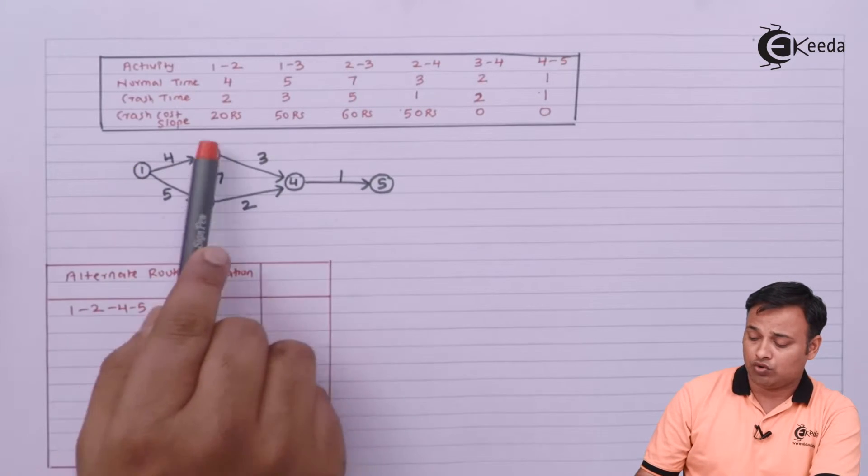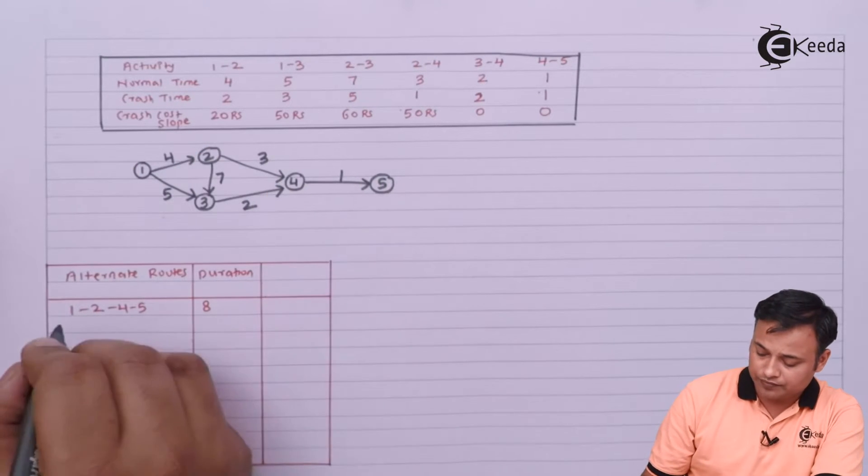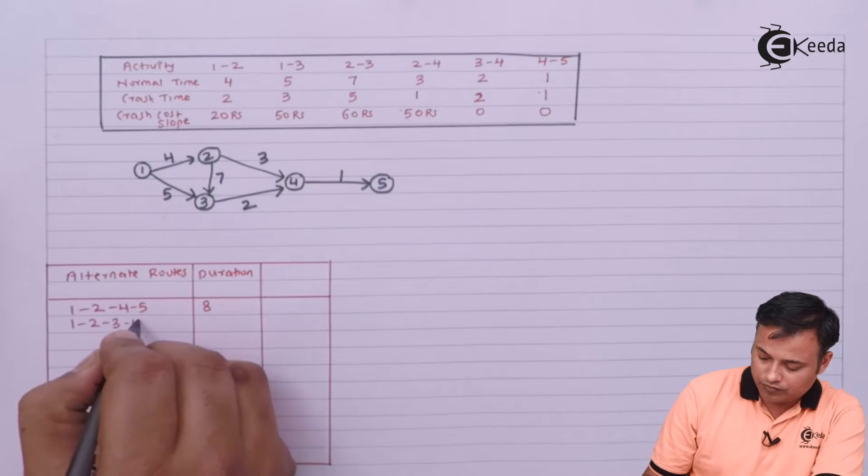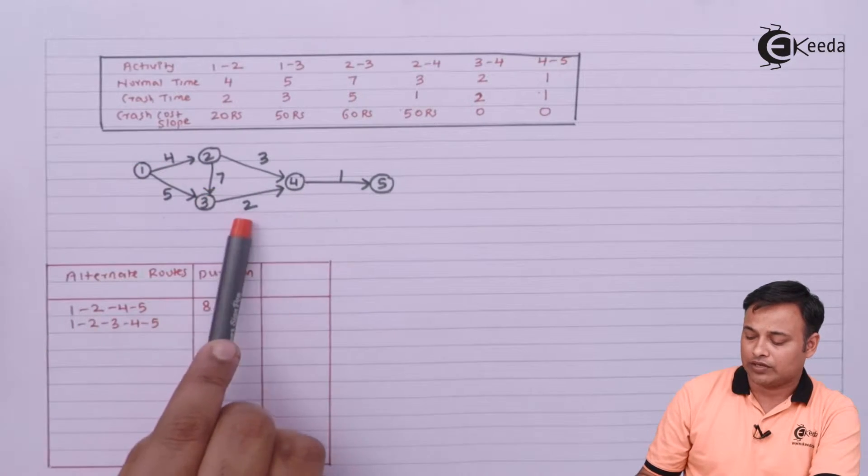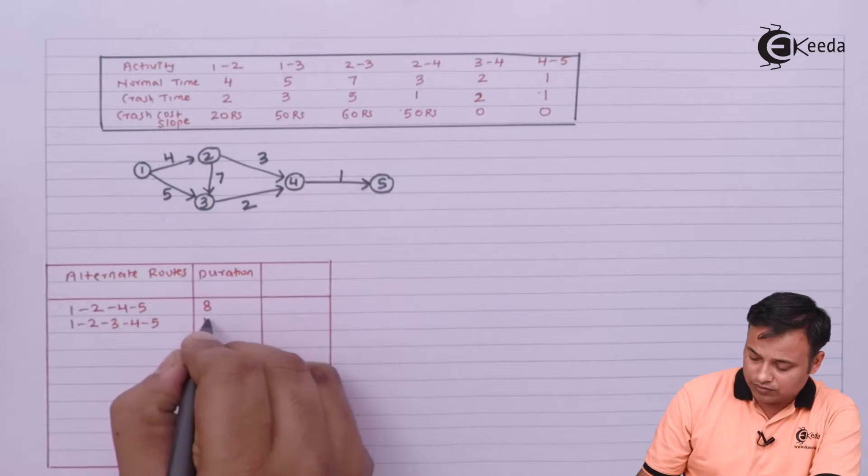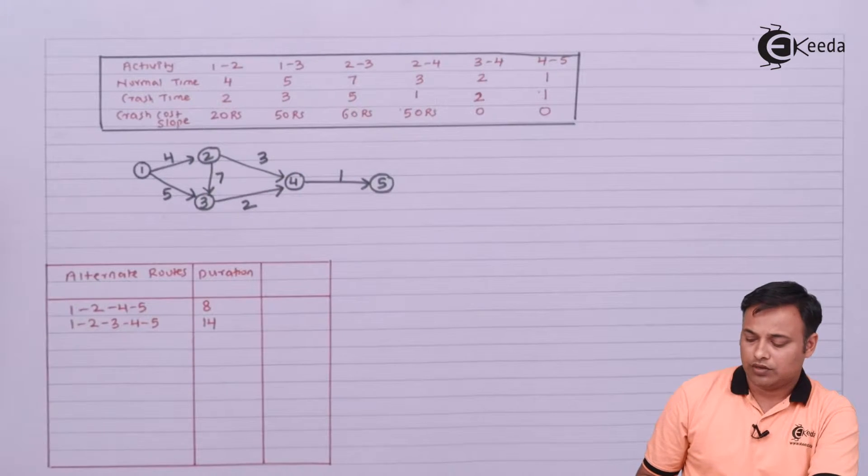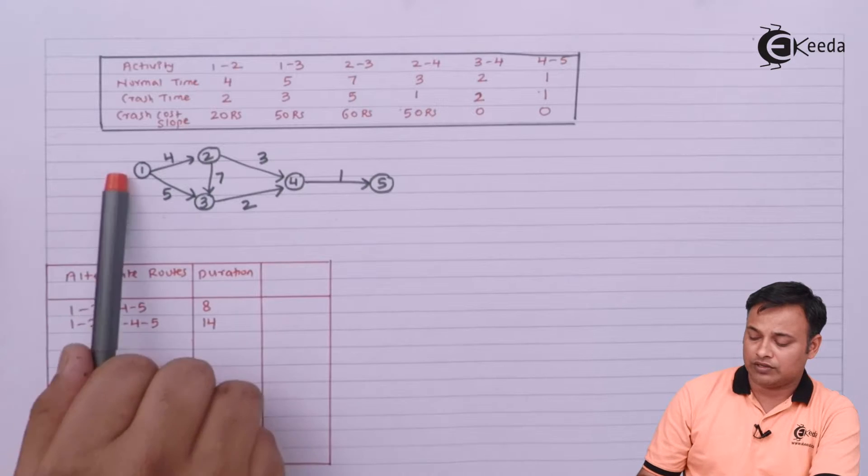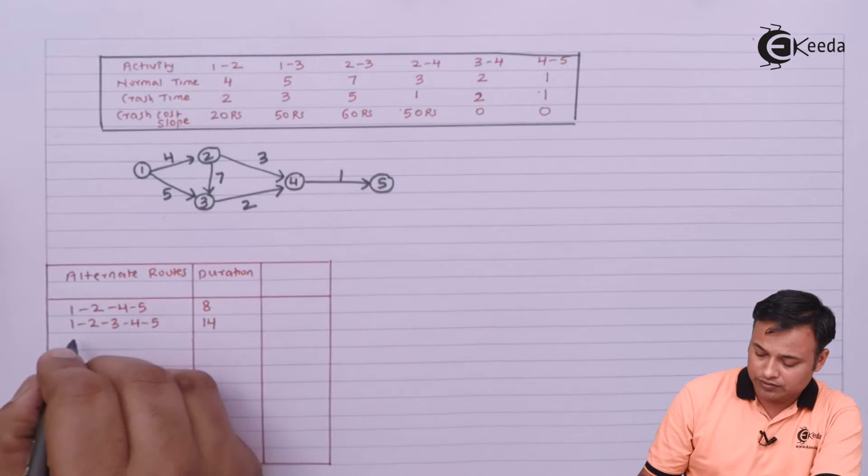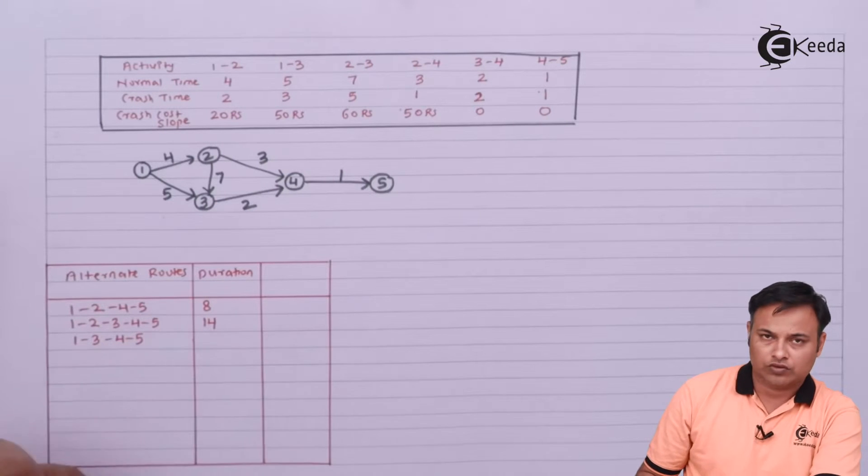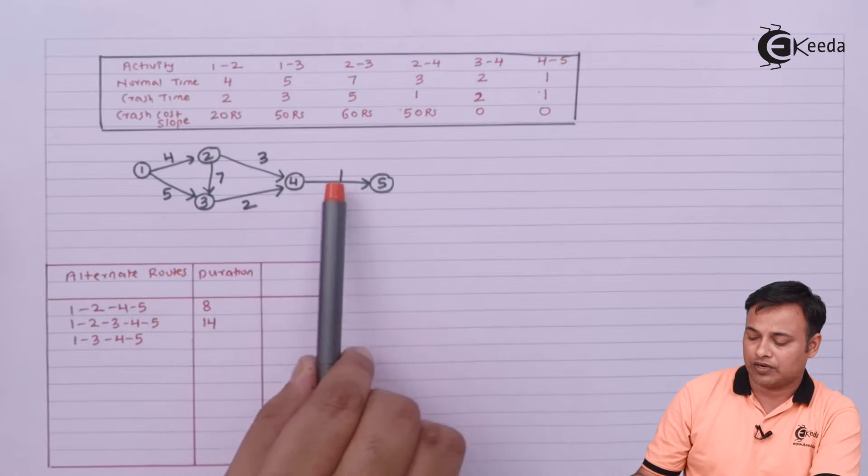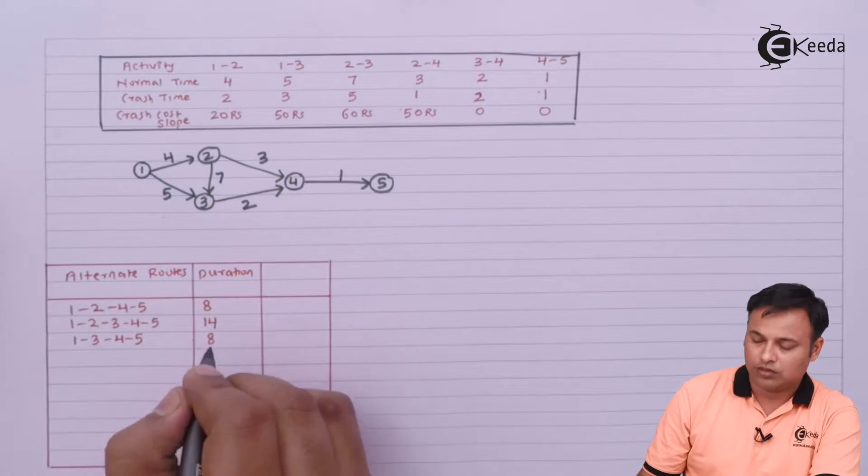My other route will be 1-2-3-4-5. It will be 4 plus 7, 11, 12, 13 plus 1, which is 14. And my third route will be 1-3-4-5. It will be 5 plus 2, 7 plus 1, which is 8.